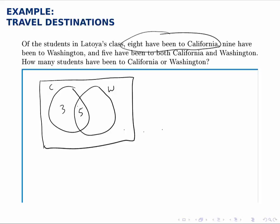Similarly, if there are nine students who have been to Washington, there are nine people in the right-hand circle. But we've already counted five of them, so we only need four more to make nine.